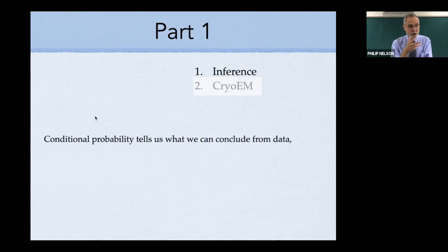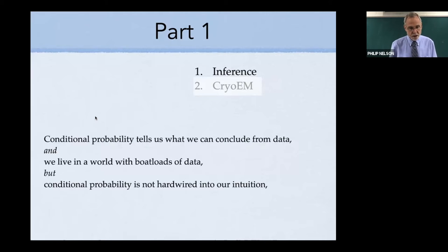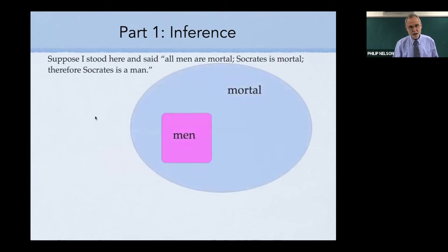Let's think about conditional probability. Conditional probability tells us what you can conclude from data, and we do live in a world with boatloads of data. But conditional probability is not hardwired into human intuition, and that makes it difficult. There's a whole category of lawyers whose job is to confuse juries on the subject of conditional probability. We need to systematize it. We've got a tool I want to remind you about called the Bayes formula. If I said all men are mortal, Socrates is mortal, therefore Socrates is a man, you'd immediately pelt me with tomatoes. You'd say that's ridiculous, that's stupid. Here, I'll make a Venn diagram.